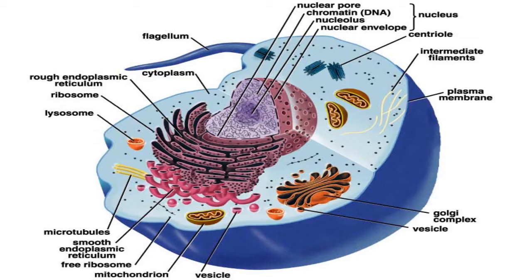Mitochondria are oblong-shaped organelles found in the cytoplasm of all eukaryotic cells. In plant cells, they break down carbohydrate and sugar molecules to provide energy, particularly when light isn't available for the chloroplasts to produce energy.